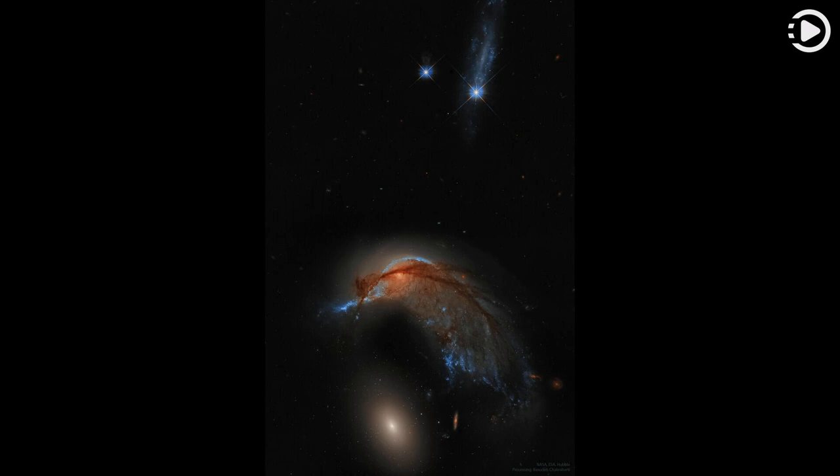But then it got too close to the massive elliptical galaxy NGC 2937, just below, and took a turn. Sometimes dubbed the Hummingbird Galaxy for its iconic shape, NGC 2936 is not only being deflected but also being distorted by the close gravitational interaction.